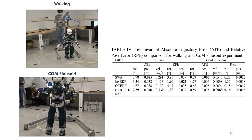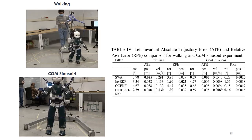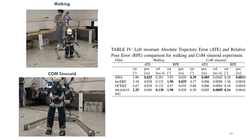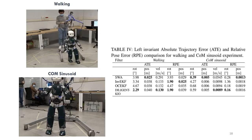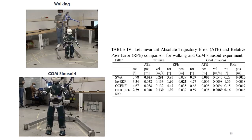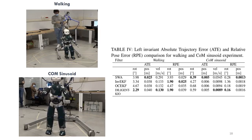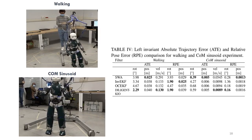We compute the absolute trajectory error and the relative pose error in the left invariant sense for both walking and COM sinusoid experiments. In general, Diligent KIO performs slightly better than state-of-the-art methods for orientation and velocity estimates. While Diligent KIO performs comparably with other filters for position estimates, it suffers from position drifts more than other filters in long-duration experiments.